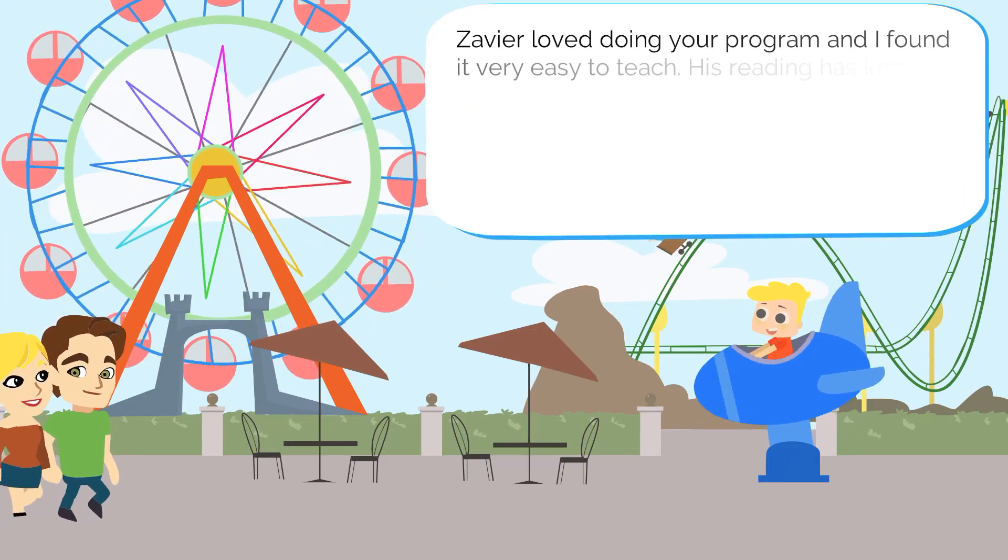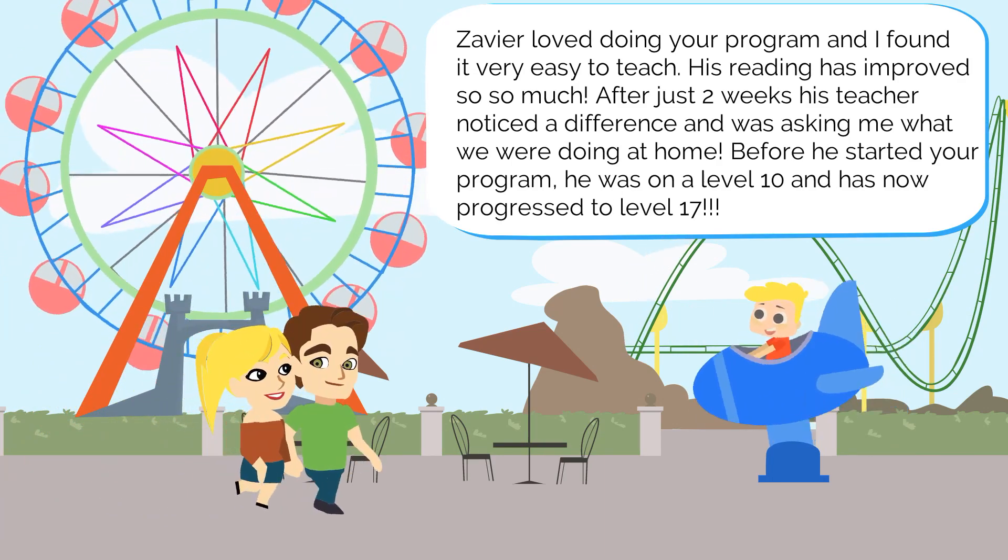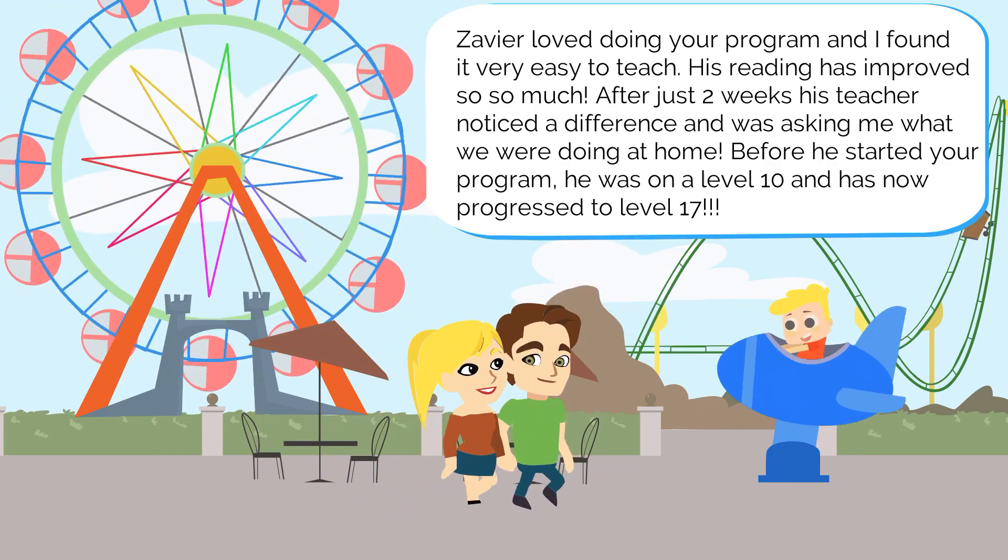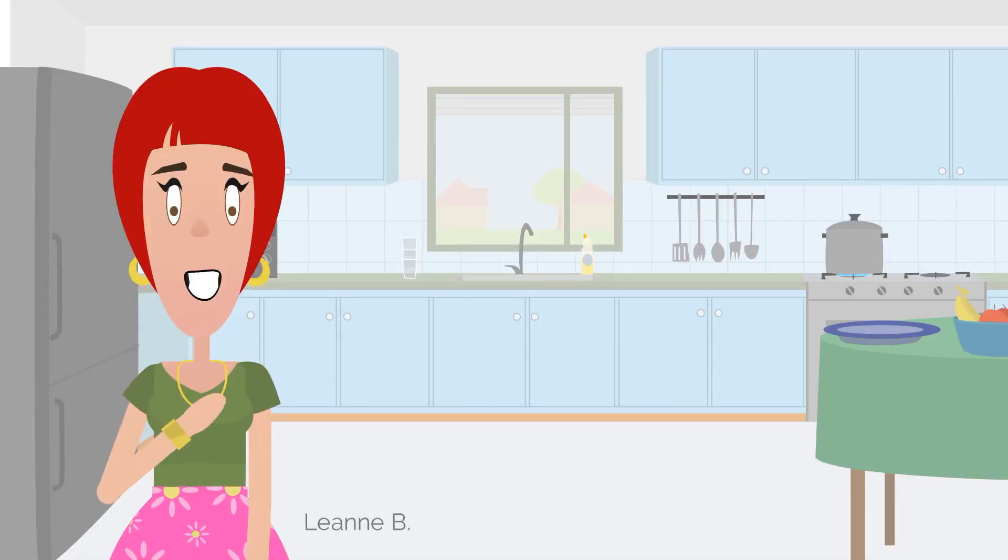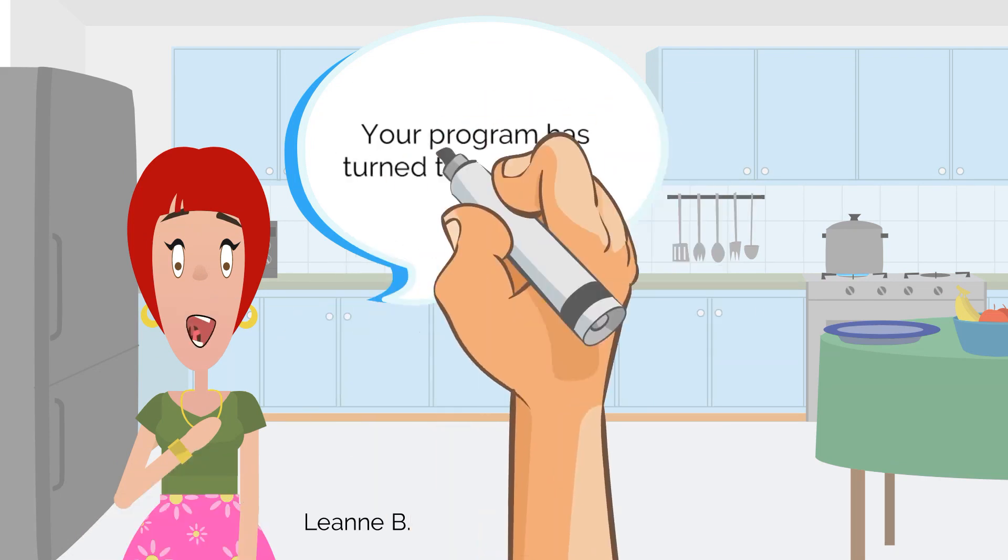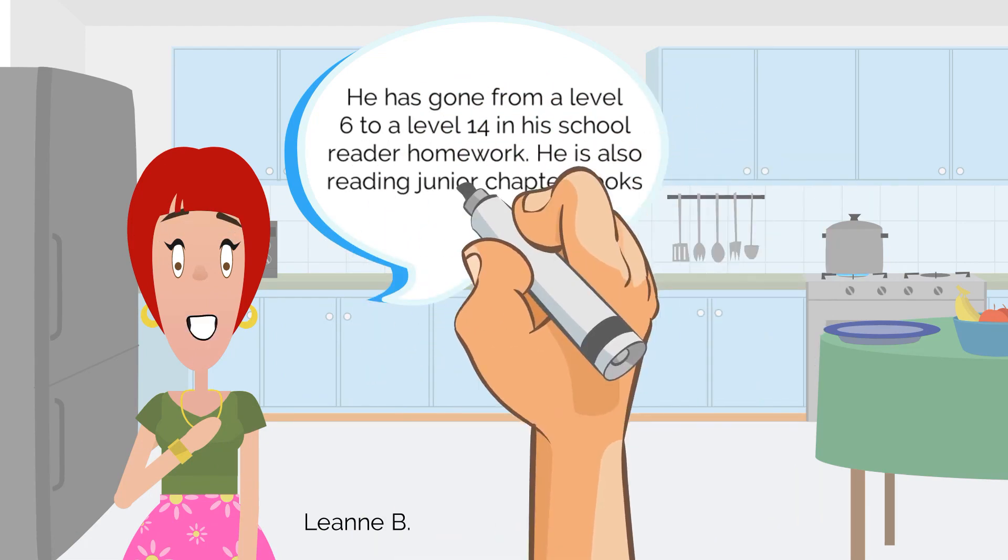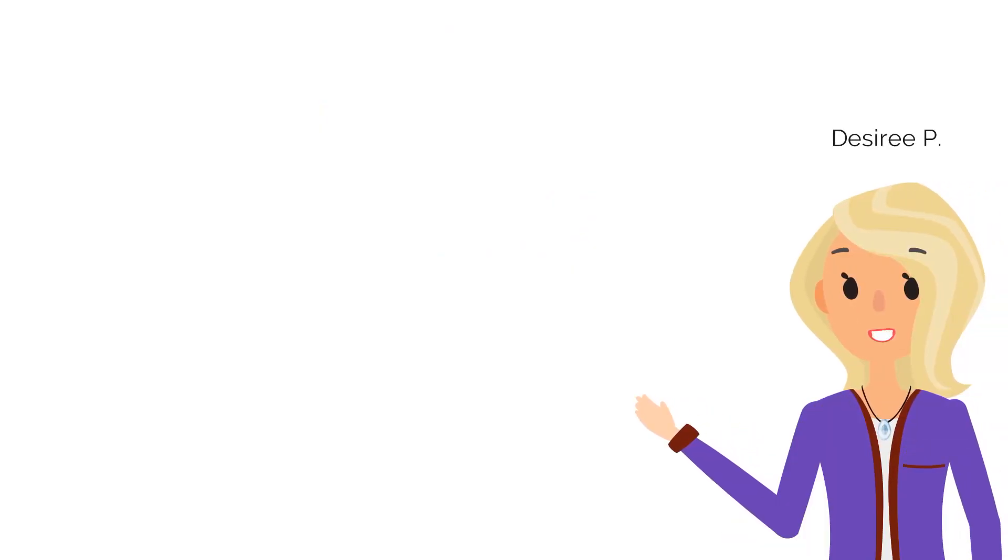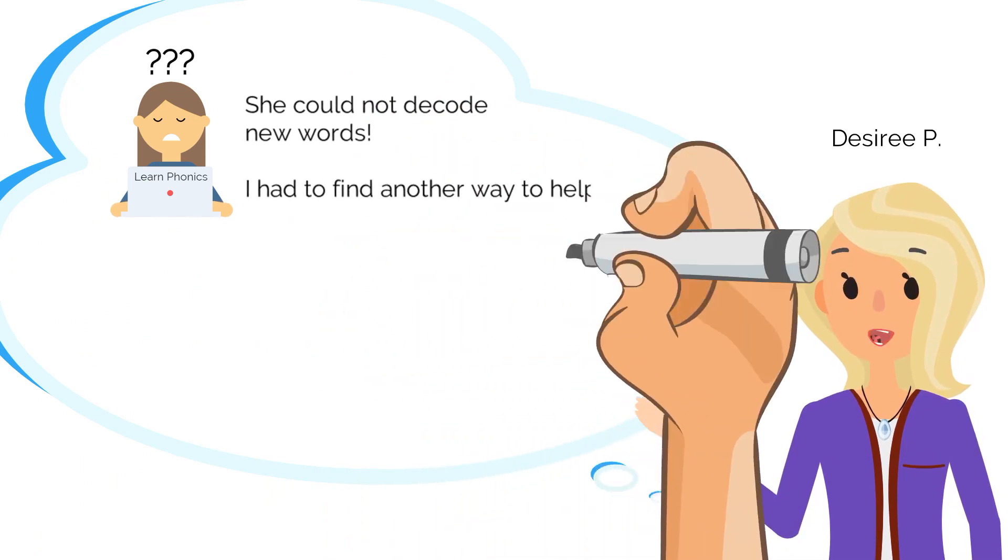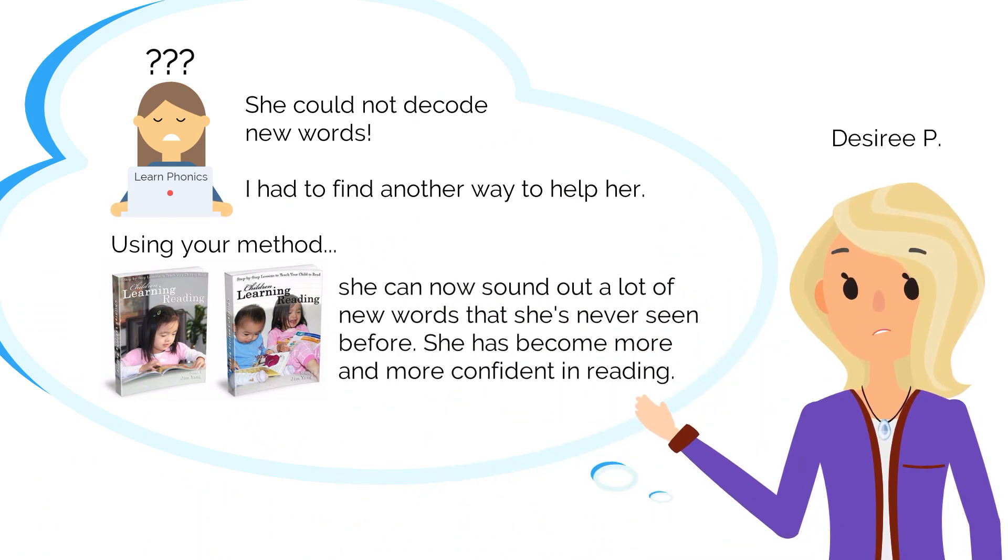From Amber and Marco. Xavier loved doing your program, and I found it very easy to teach. His reading has improved so much. After just two weeks, his teacher noticed a difference and was asking me what we were doing at home. Before he started your program, he was on a level 10 and has now progressed to level 17. From Leanne B. My six-year-old's reading was not improving, and he was trying every trick in the book to get out of doing his reading homework. Your program has turned things around. He has gone from a level 6 to a level 14 in his school reader homework. He is also reading junior chapter books by choice. I love it. From Desiree P. I first started her learning through hooked-on phonics, but I slowly noticed that she could not decode new words. I had to find another way to help her. Using your method, she can now sound out a lot of new words that she's never seen before. She has become more and more confident in reading.